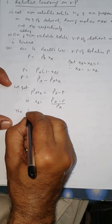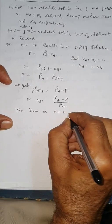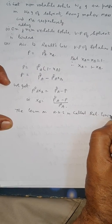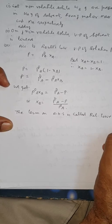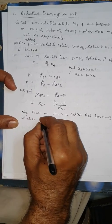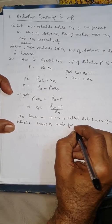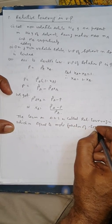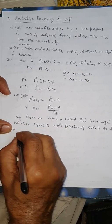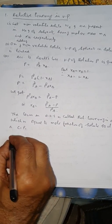The term on the right hand side is called relative lowering in vapor pressure, which is equal to mole fraction of solute. So it is a colligative property (CP).